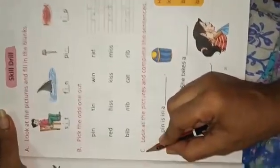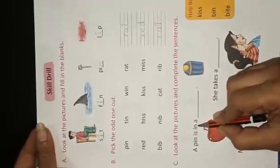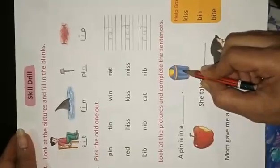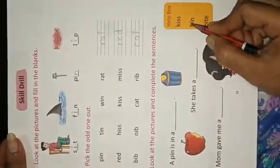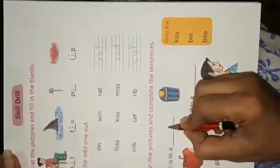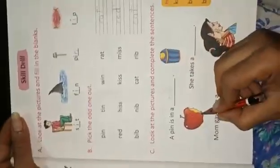Now C exercise, look at the pictures and complete the sentences. A pin is in a, what is this? This is a picture of bin. B-I-N bin. So we write here B-I-N bin. A pin is in a bin.